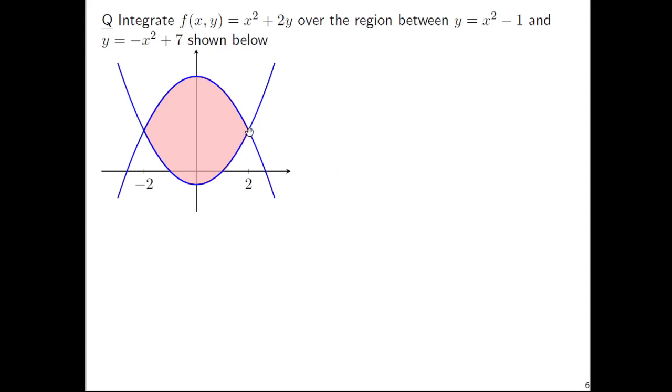I won't go through the algebra, but you could certainly get that the two points of intersection of these two parabolas will have x coordinate either plus two or minus two. And so the region that we actually have here, apologies for the typo, this should be x going from negative two to positive two, and y going between x squared minus one and negative x squared plus seven.